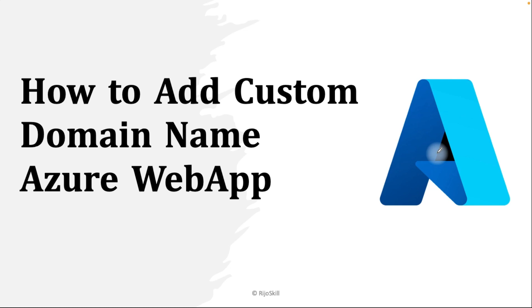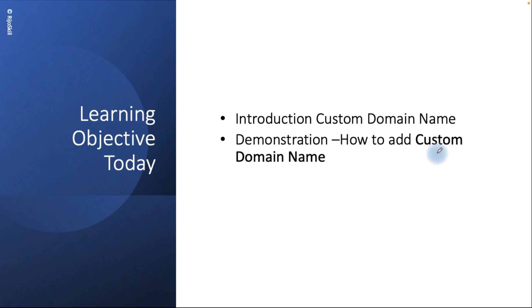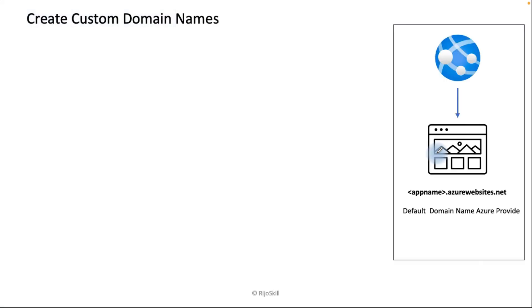Hi friends, I am Rejo. Today we are planning to cover the topic: how we can add our custom domain name in the Azure web app. The learning objective is an introduction to custom domain names and a demonstration of how to add a custom domain. When you create your app, for example 'rejoskill', Azure will automatically provide a default domain like rejoskill.azurewebsites.net. We will discuss how to change this to your own domain like rejoskill.com, similar to Apple and Google.